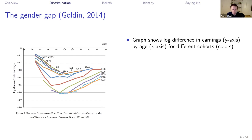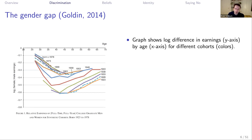The graph I'm showing here summarizes this discussion fairly well. On the x-axis you see people's age from 20 to 70. On the y-axis you see the log of female-to-male earnings — essentially a measure of the gender gap. The difference in log is essentially the percentage difference in female versus male earnings. So minus 0.3 would represent roughly a 30% difference in female versus male earnings.